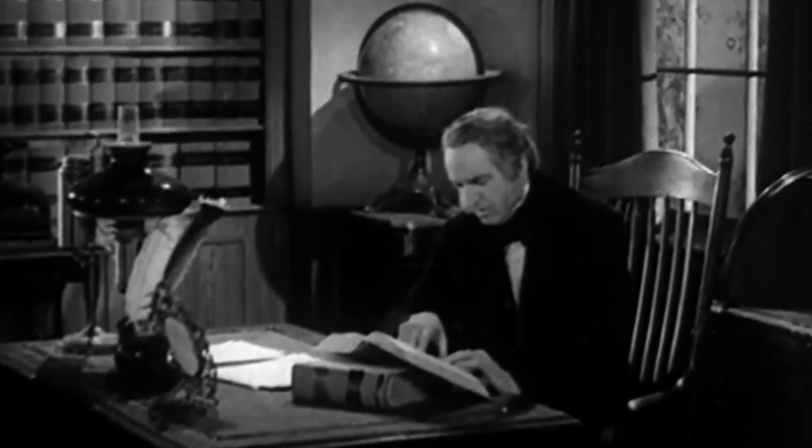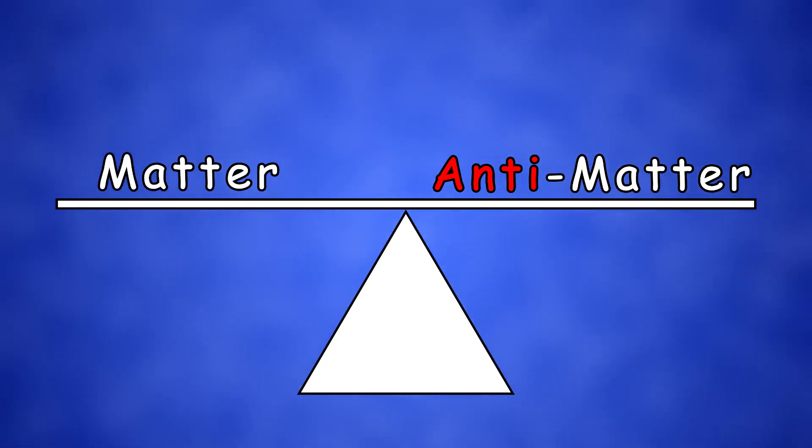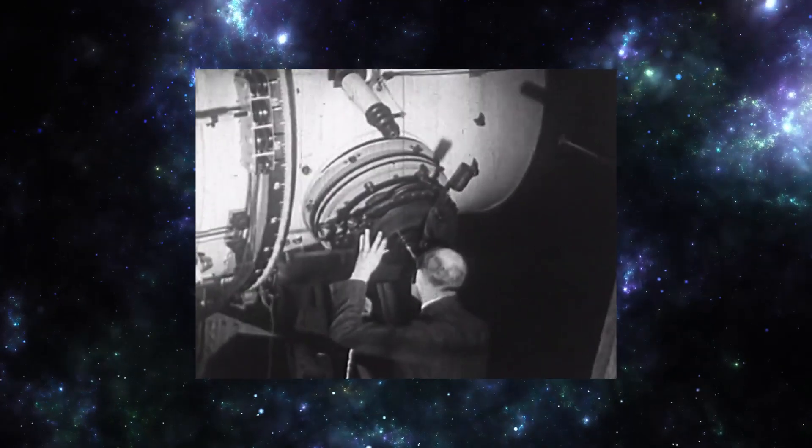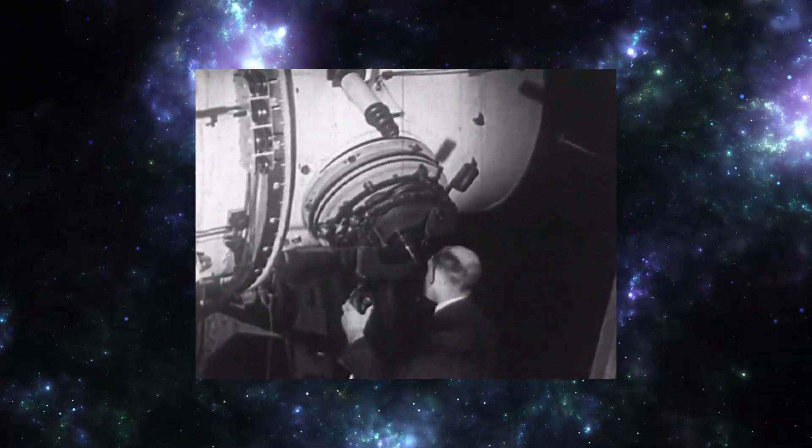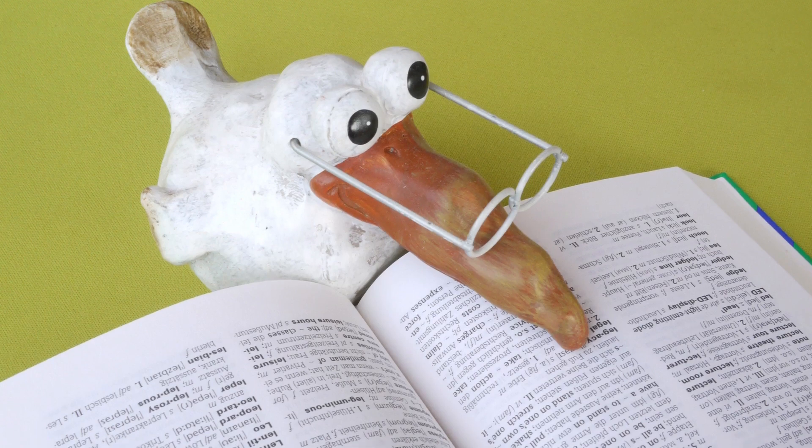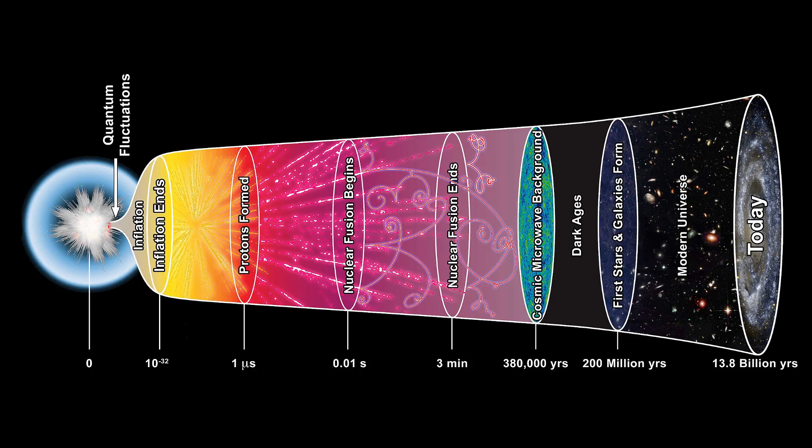Even though in theory antimatter should exist in equal amounts as matter itself, in everything we've observed, antimatter is extremely rare, contradicting very important theories about the universe's origins.